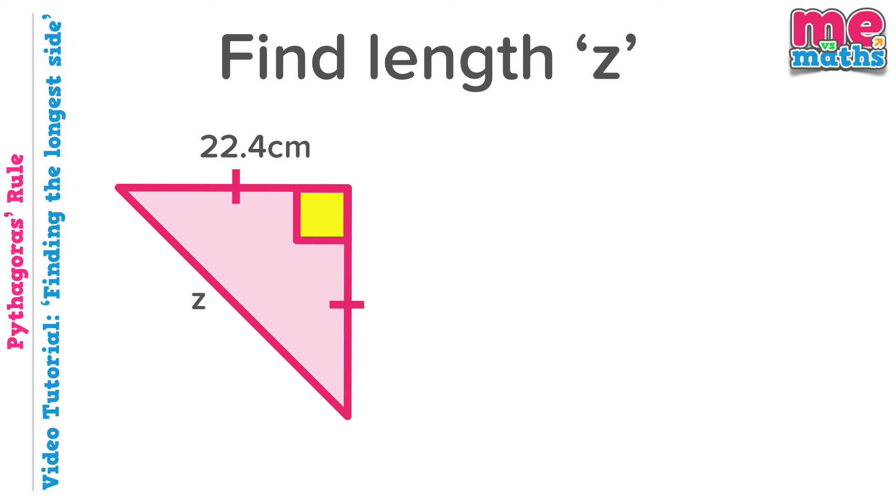One final example to look at, which is just a little bit different. We're being asked to find z, let's check if that's the hypotenuse. It's opposite the right angle, so yes it is. So our instructions to follow again: square it, square it, add it, root it.